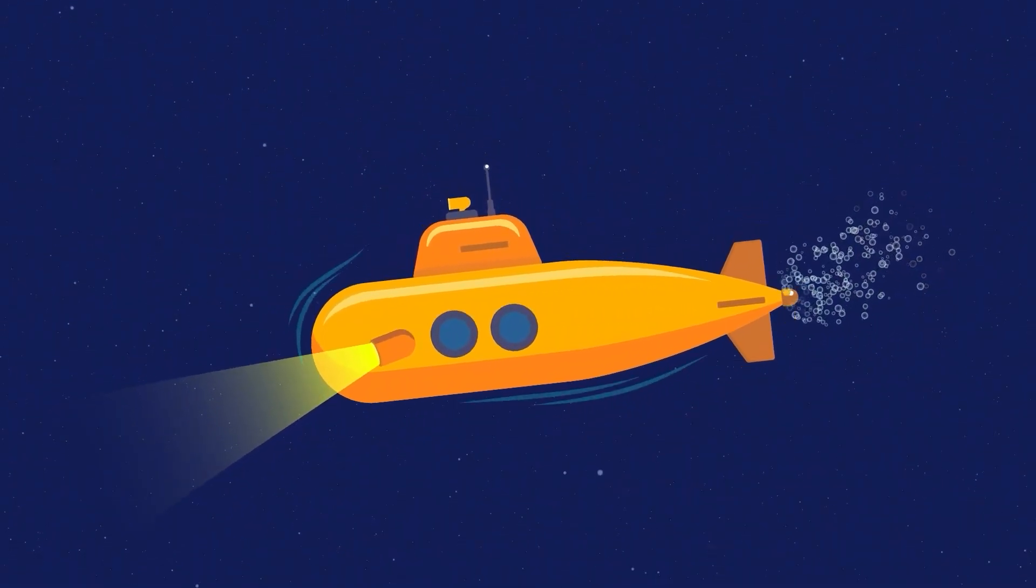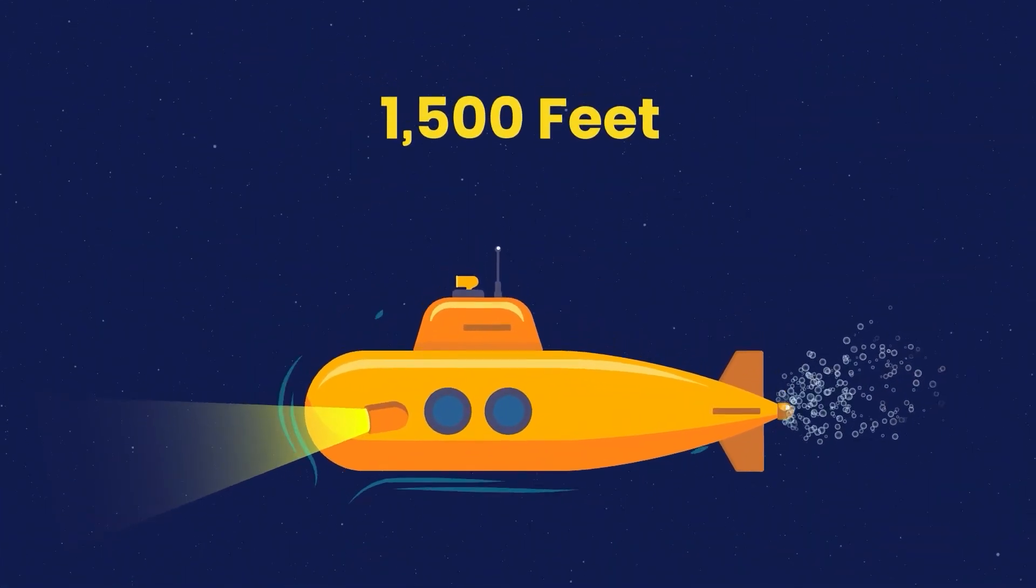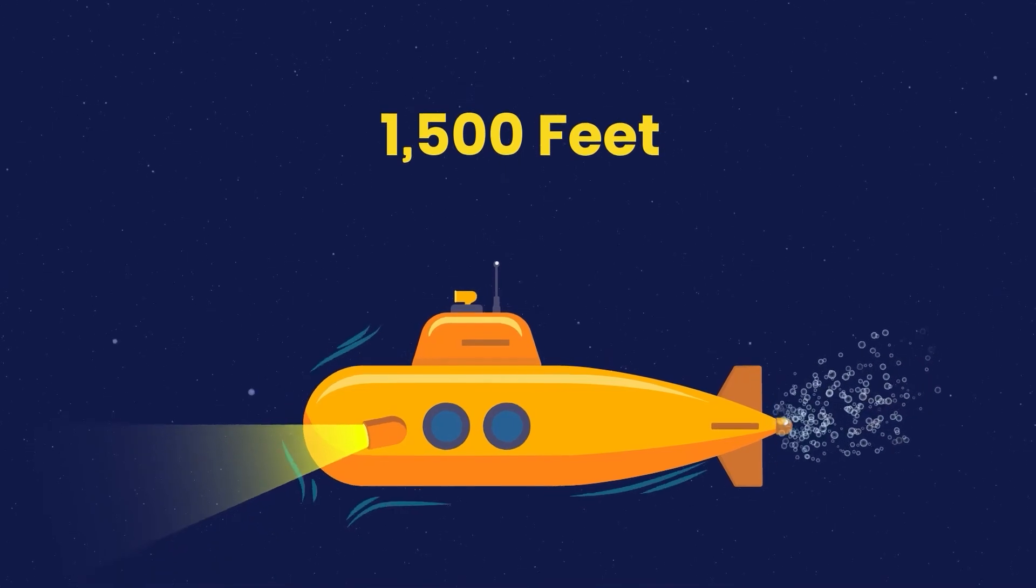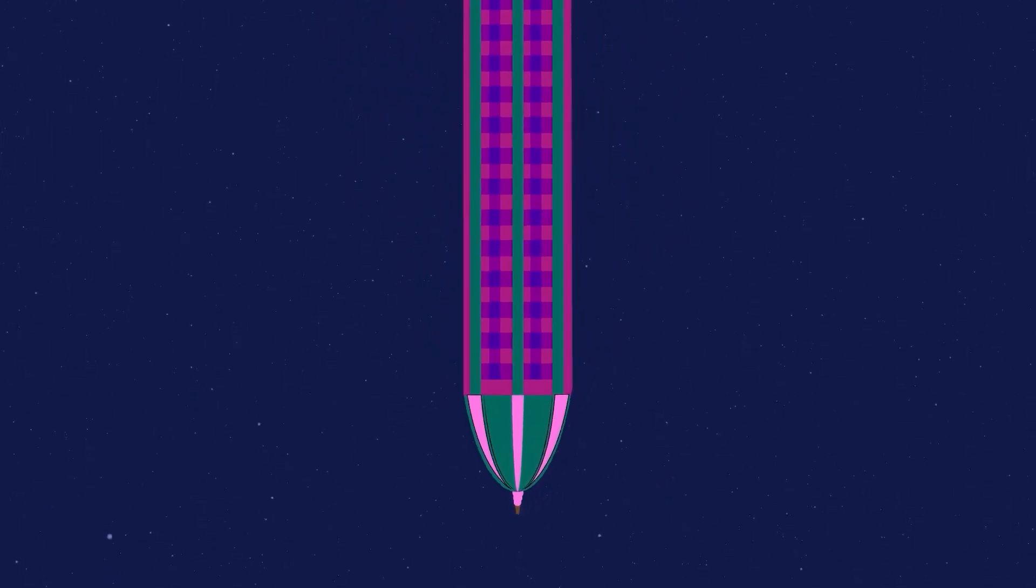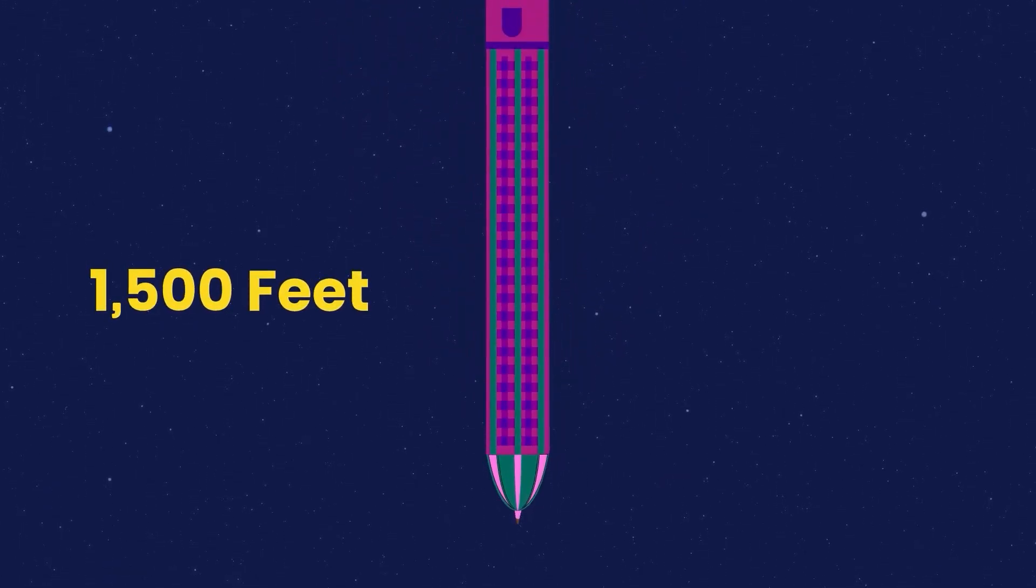Flash forward on a deep dive to 1,500 feet. We're now at a depth easily imagined if you were to take Europe's tallest building, the Lochta Center, turn it upside down, and then dunk it into the ocean. At 1,500 feet down, the ocean layer here is known as the Twilight Zone.